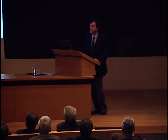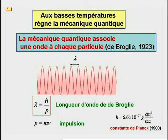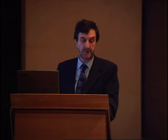Aux basses températures règne la mécanique quantique. Selon l'hypothèse de De Broglie, la mécanique quantique associe une onde à chaque particule. La longueur d'onde de De Broglie est fixée par la constante de Planck, la constante fondamentale de la mécanique quantique, et par l'impulsion de la particule. Donc la longueur d'onde devient plus grande lorsque la vitesse des atomes diminue.